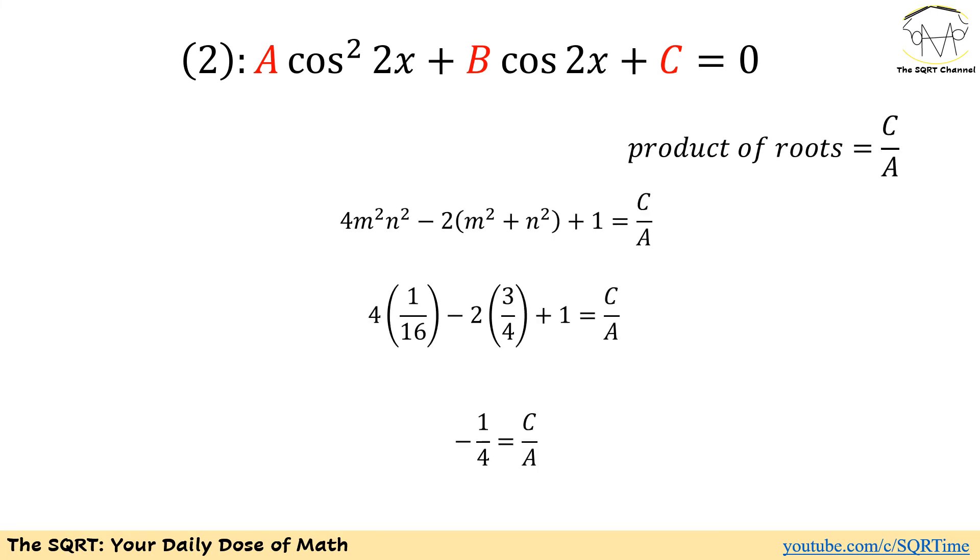Now product of roots needs to be C over A. Product of roots here is going to be 2M squared minus 1 times 2N squared minus 1. If we apply the multiplication we can write it as 4M squared N squared minus 2 times M squared plus N squared plus 1. Now MN to the power of 2 can be written as minus 1 over 4 to the power of 2 or 1 over 16. M squared plus N squared can be written as M plus N to the power of 2 minus 2 times MN. This can be simplified and written as 3 over 4.